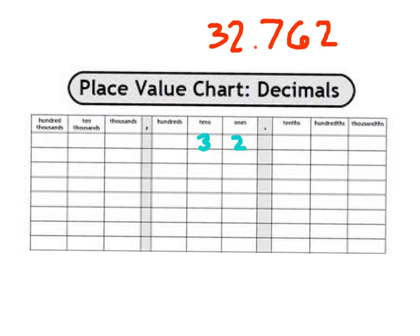In the ones place, we have the number 2, and then we have our decimal point. And then we have the 7, 6, and the 2 in the tenths place, hundredths place, and thousandths place. I'll write my 7, 6, 2 right there. So that's 32, and then we read it as 'and' — 762 thousandths.